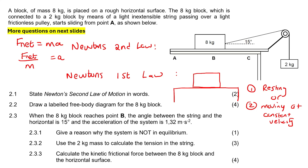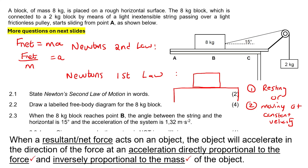Now if I go get the definition, it'll make a lot of sense. When a resultant — a net force, which you can think of as an unbalanced force — acts on an object, the object will accelerate in the direction of the force at an acceleration that is directly proportional to the force and inversely proportional to the mass of the object.